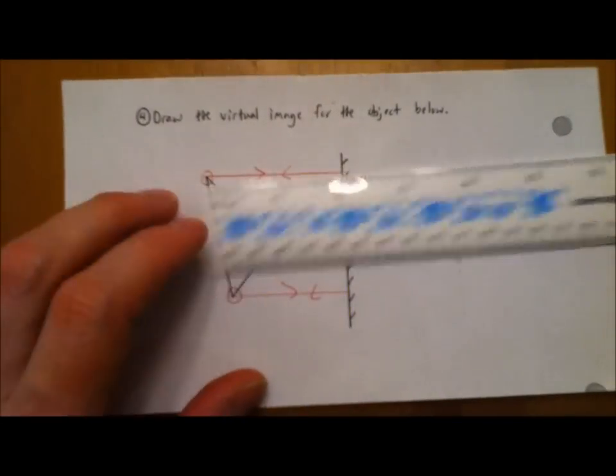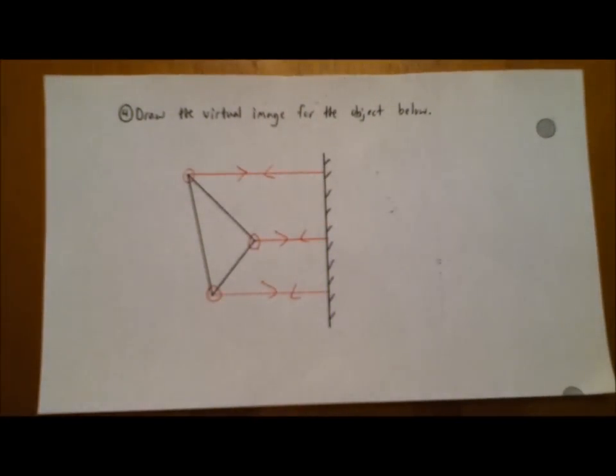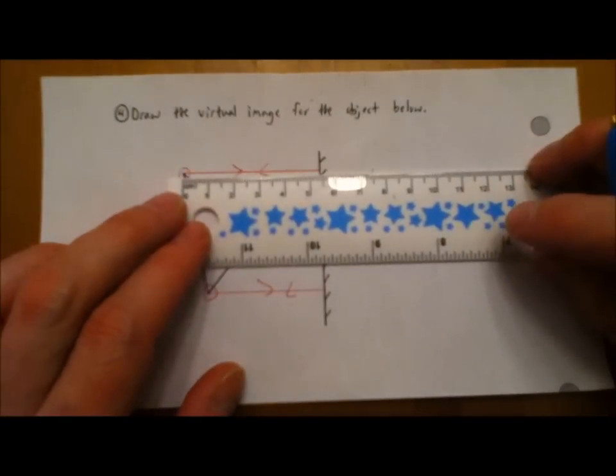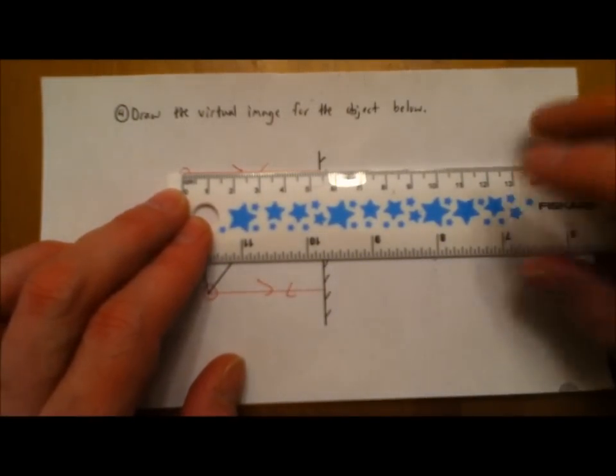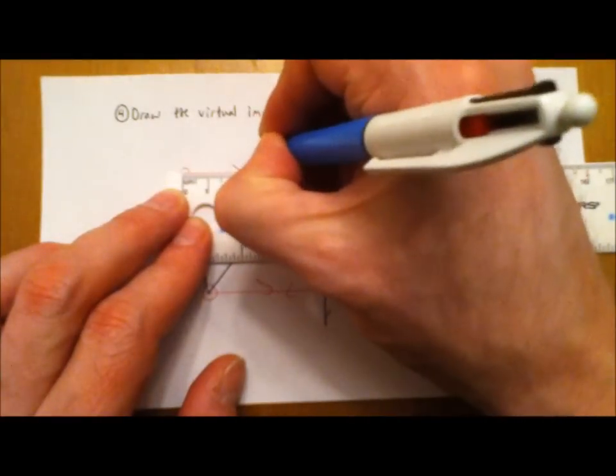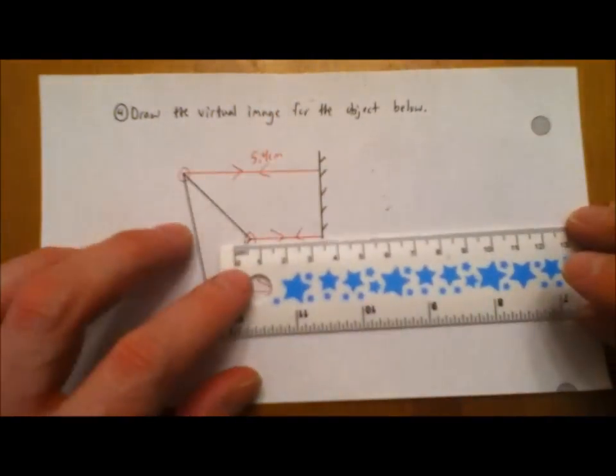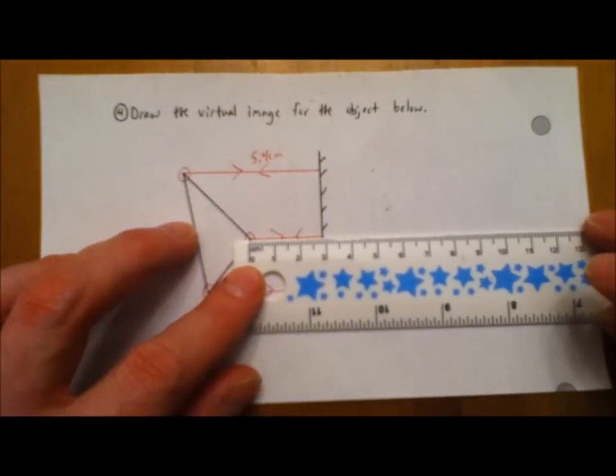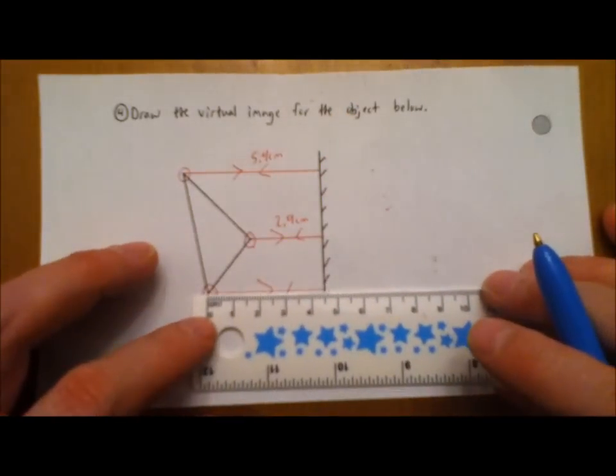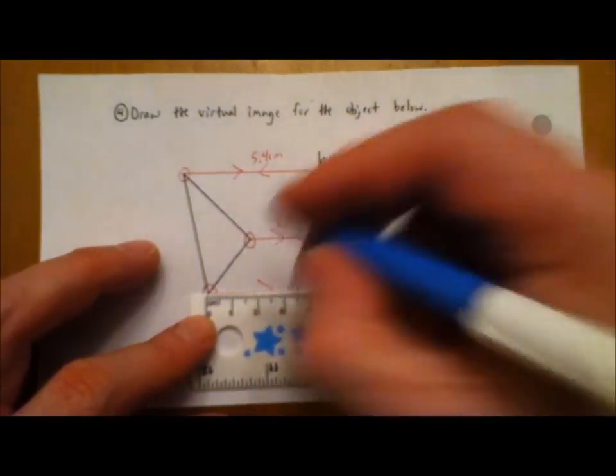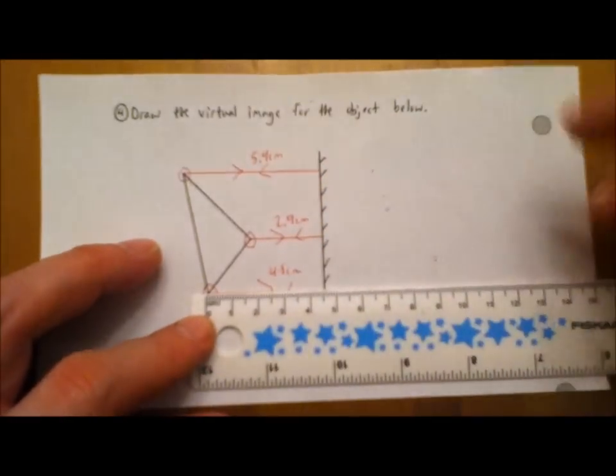Then what you're supposed to do is actually measure the distance from each of those points, and then write the measurement on each of the light rays. So here this one's 5.4 centimeters, this one here is 2.9 centimeters, and this one over here is 4.5 centimeters.